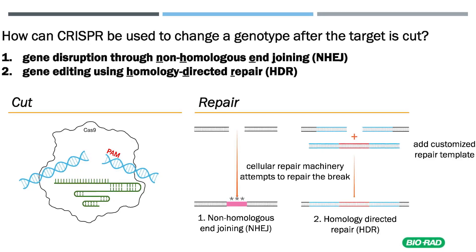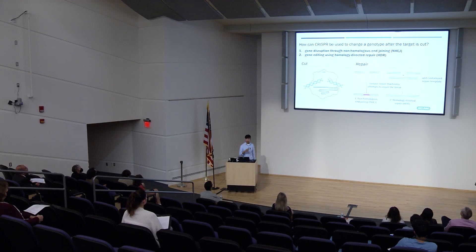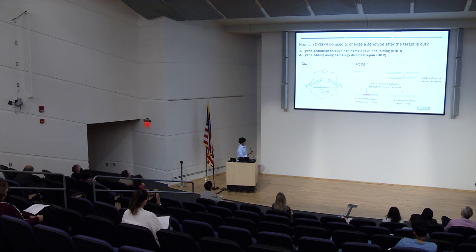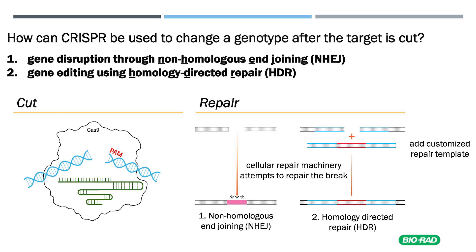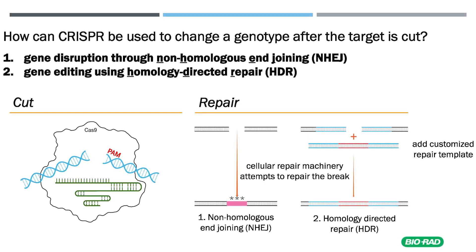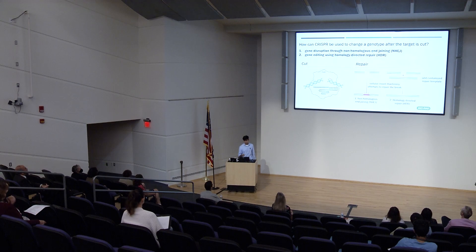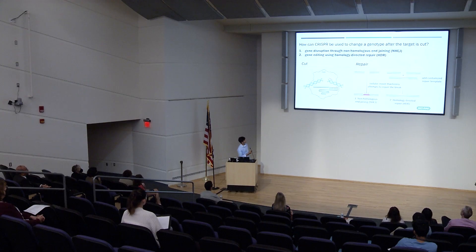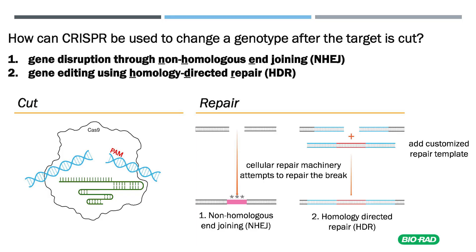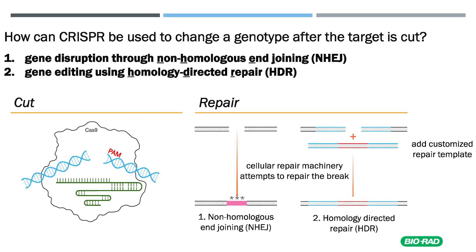How can CRISPR be used to change a genotype after the target is cut? There are two ways for gene disruption. The first is non-homologous end-joining, also called NHEJ. After the DNA is cut, the cell repairs the break by itself using its repair machinery. This is not as precise as the second method: homology-directed repair, where scientists can more easily customize the repair template, making it a more precise way of repairing the target after it is cut.